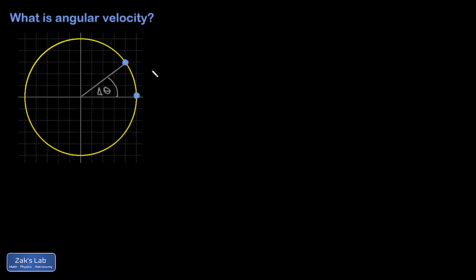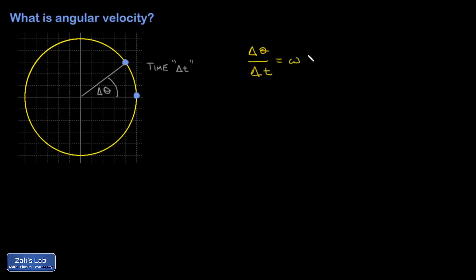So we want to define angular velocity. If I tell you it took a time of delta t for this to occur, then I can write down a rate of change in angle like this: delta theta over delta t. And it gets a special name — omega, or angular velocity.